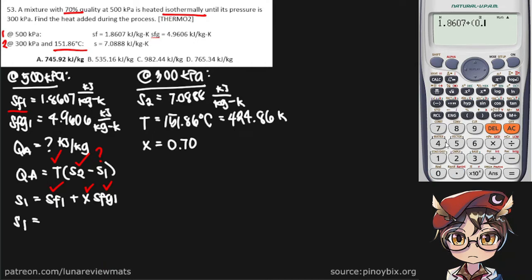Plus our steam quality of 70%, times SFG1 is 4.9606, which gives us an entropy of 5.33331 kilojoules per kilogram Kelvin, and now we have enough information to find the heat added during the process.